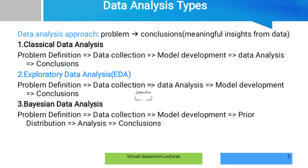Classical data analysis starts from problem definition and goes to conclusions of data. The difference between the three kinds: classical data analysis starts with problem definition, then data collection, then model generation, then data analysis, and finally conclusions. In exploratory data analysis: problem definition, then data collection, then data analysis, then model development.